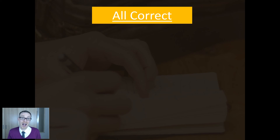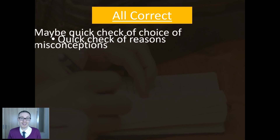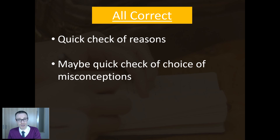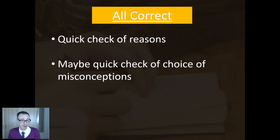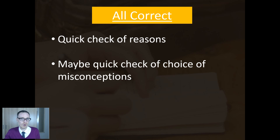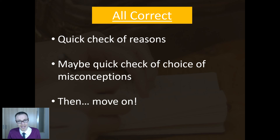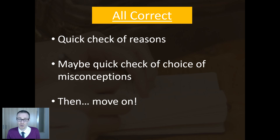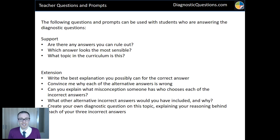What if everyone gets it right? I would do a very quick check of reasons — just pick a couple of kids: why have you chosen that? I might also do a very quick check of misconceptions: none of you went for D, but why do you think D was chosen by the question author? That just adds a bit of depth. But then I'm moving on — I'm not hanging around. Even if I've planned my lesson assuming kids would get this wrong, if they all get it right and prove their understanding, I've got to do something different.